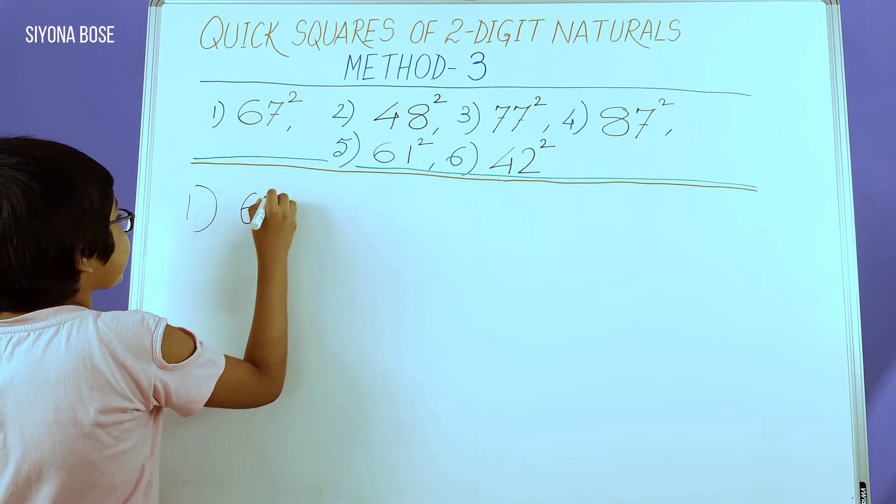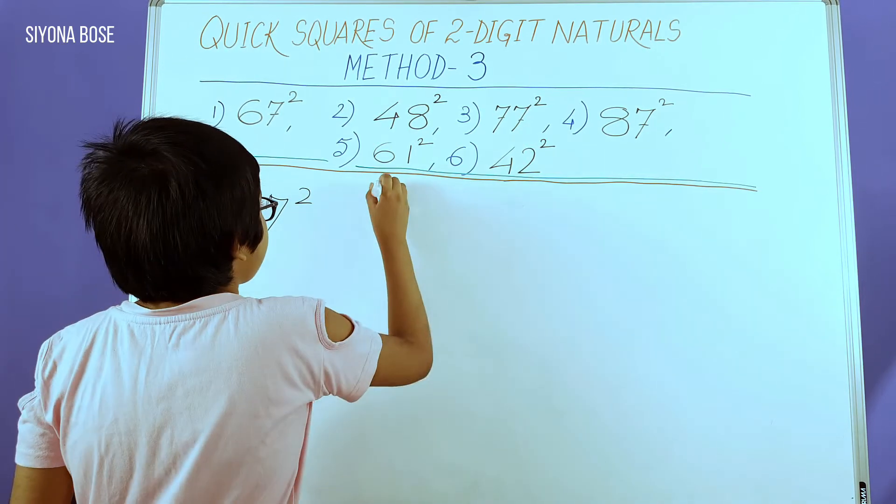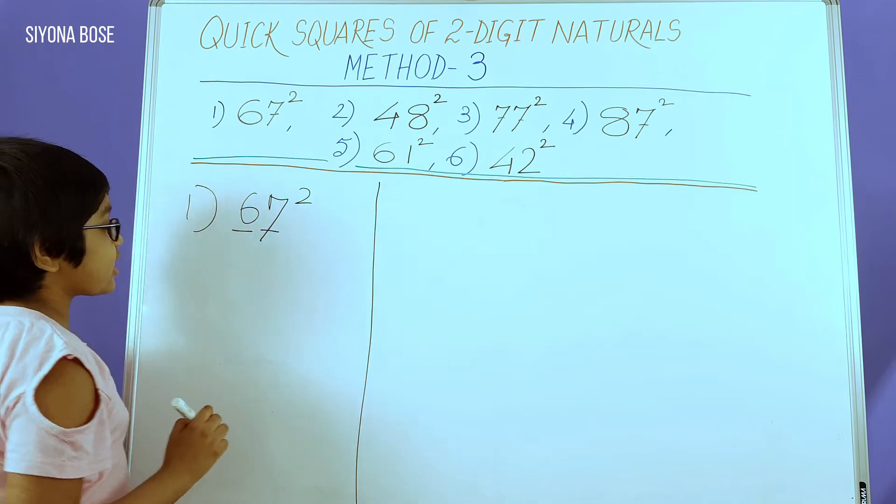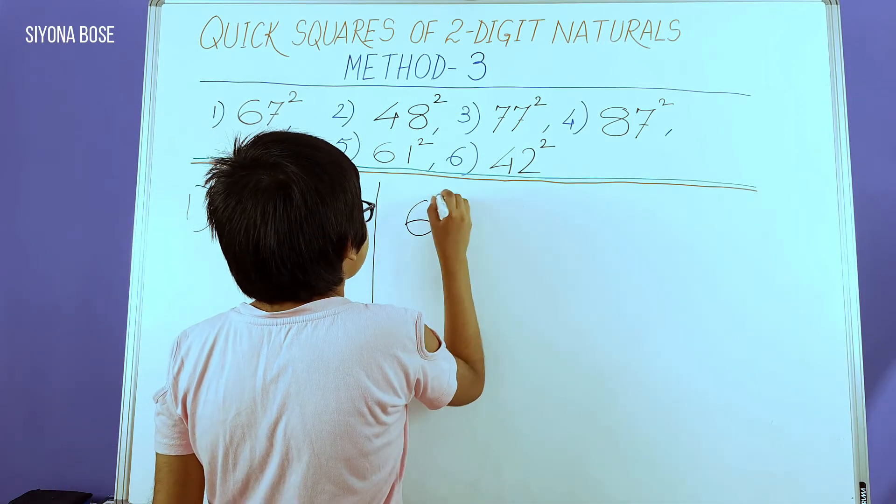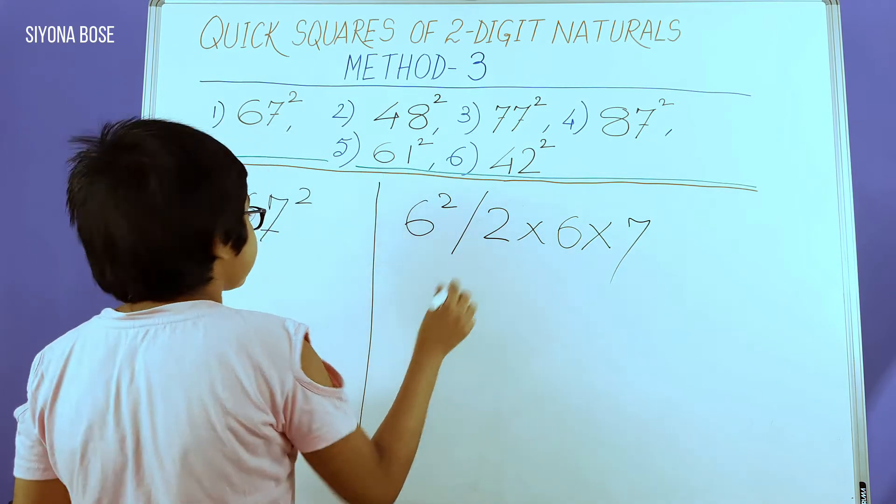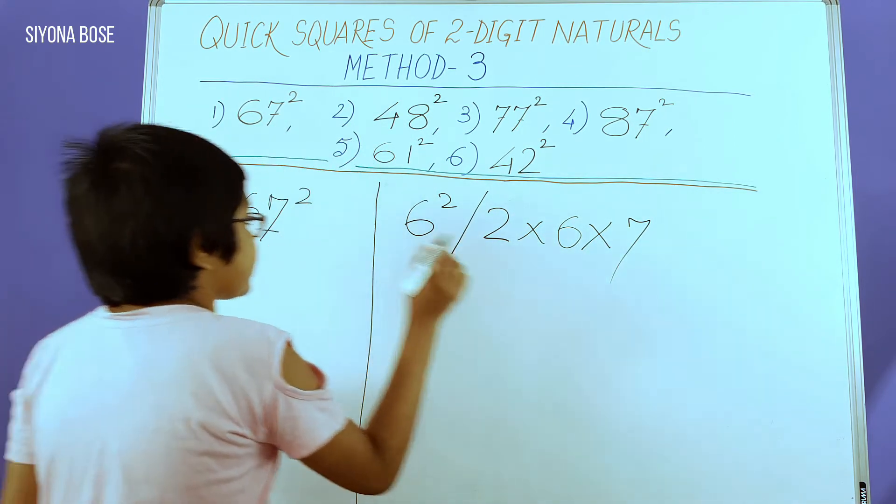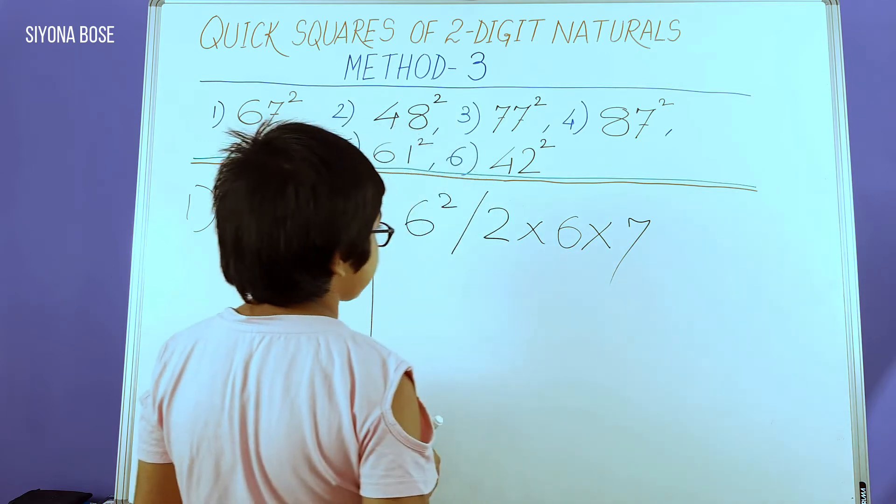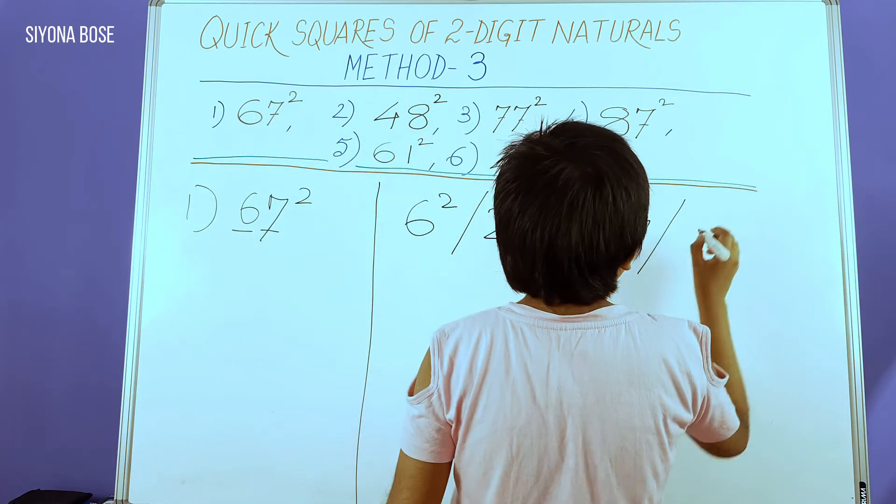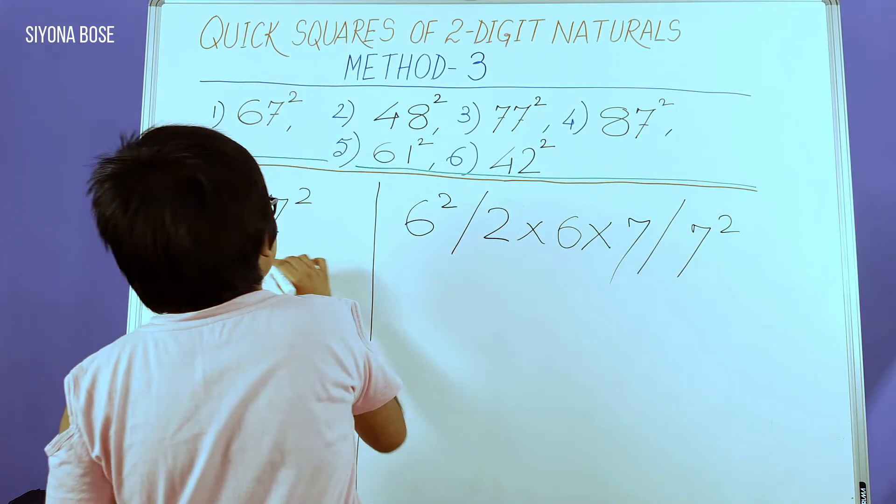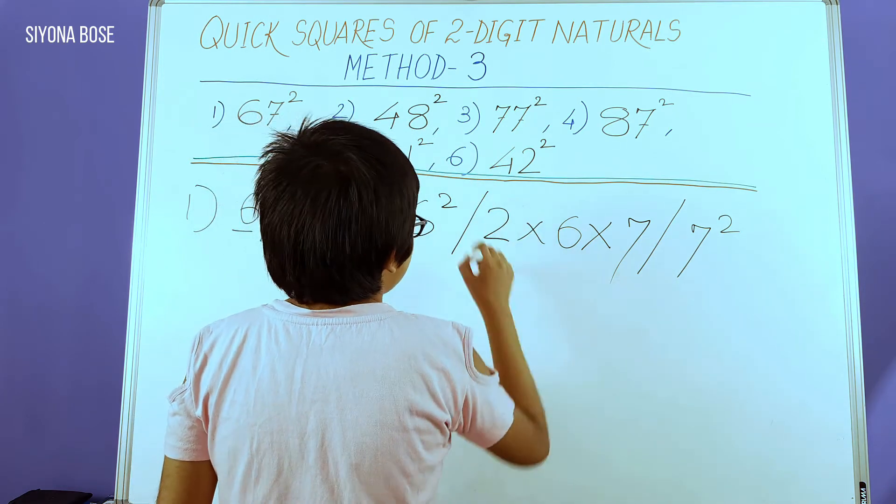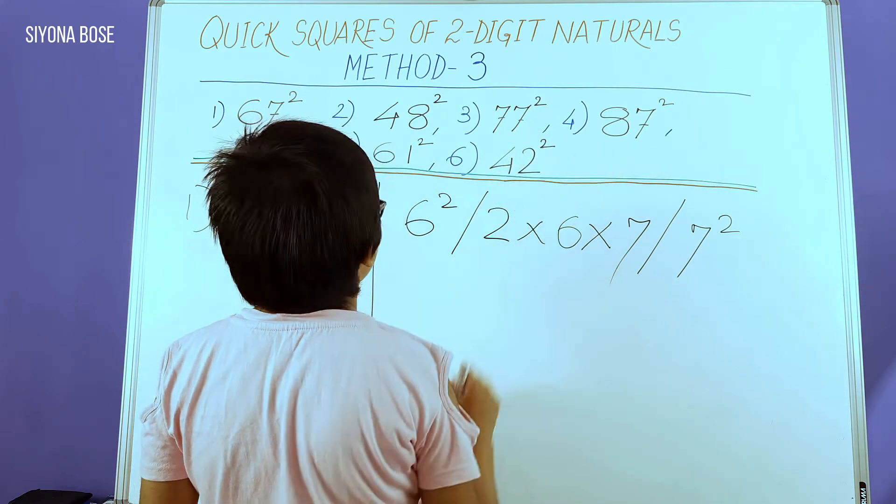First we need to find 67 squared, and this method is totally different. Listen carefully. Here we treat 6 and 7 as two separate digits. First we write 6 squared, then we write 2 times 6 times 7. I'm writing 2 because it's a rule. We need to multiply 2 with the first digit, and that first digit has to be multiplied with the second digit. 2 has to be there in all of them since it's a rule. And 7 squared—7 is the second digit. We need to square both end digits, 6 squared and 7 squared. Multiplying by 2 is done in the middle step, and multiplying by 2 is the rule in all the squares we're doing today.